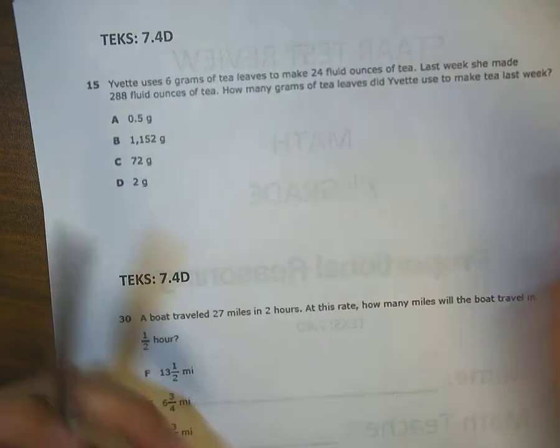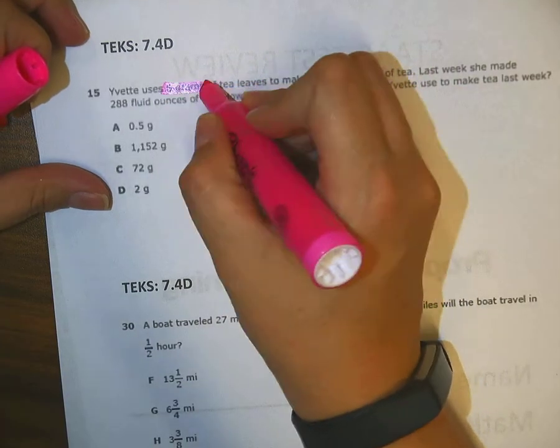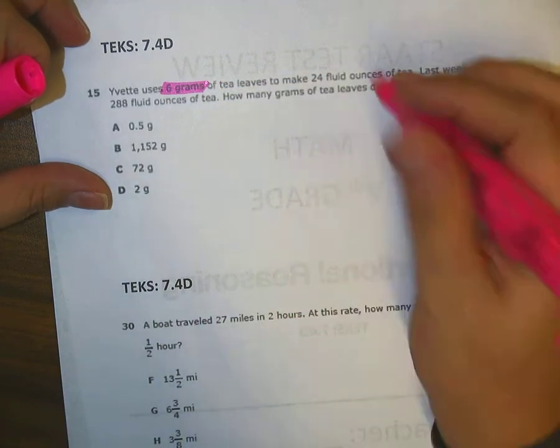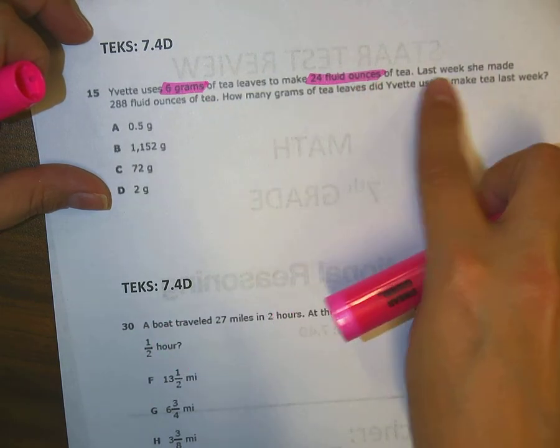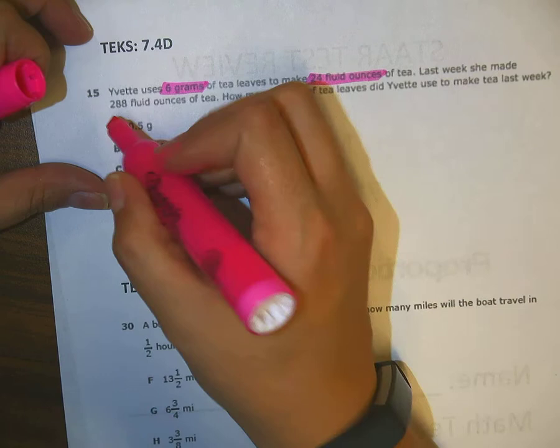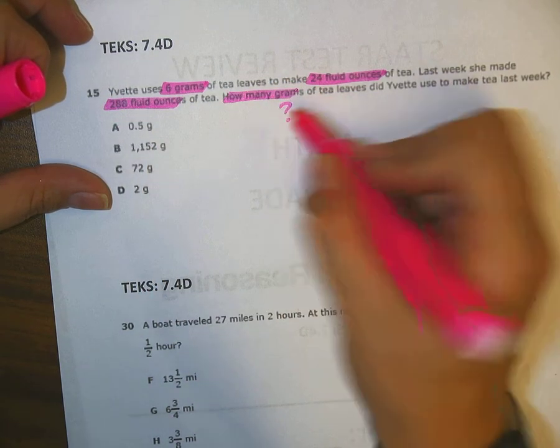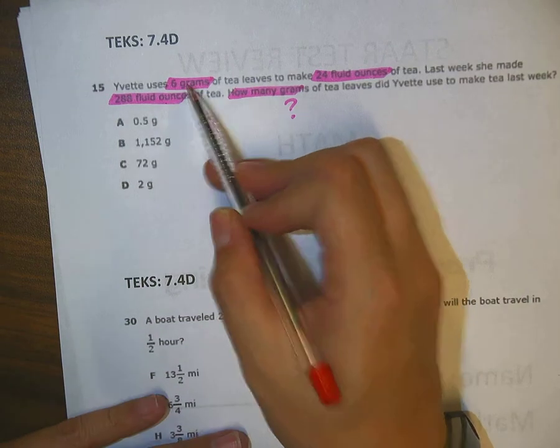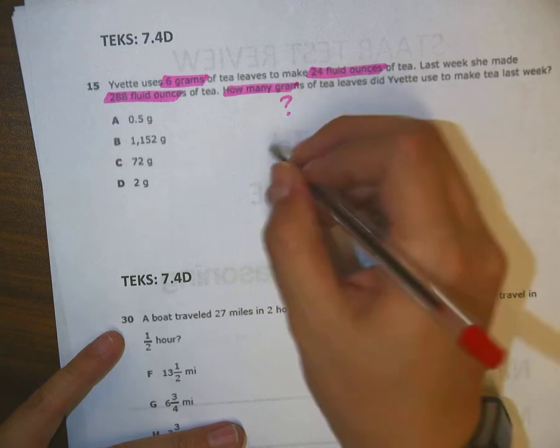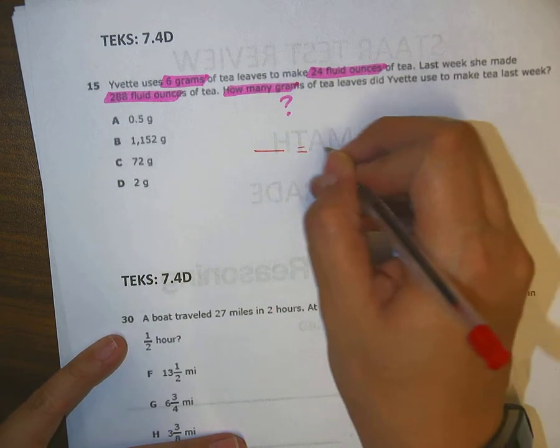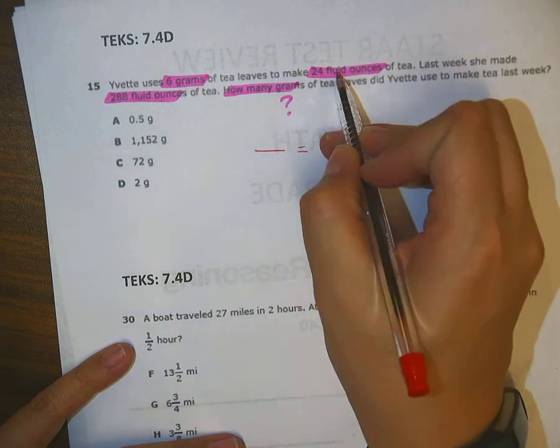Two things we've got here. We've got grams, 6 of them, and we have fluid ounces, 24. I keep looking. I should have grams or fluid ounces listed again. Oh, here we go, fluid ounces. And then the question is, how many grams? So that's what I'm solving for. Anytime they're giving you three bits of info and you're solving for the fourth, I should be thinking proportion.